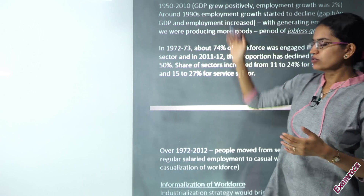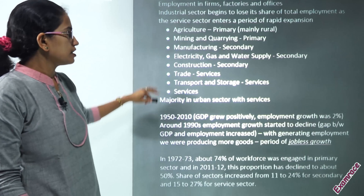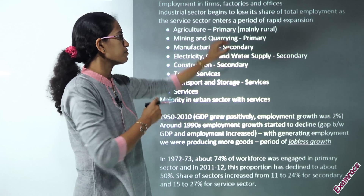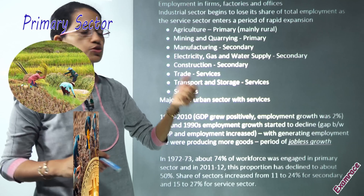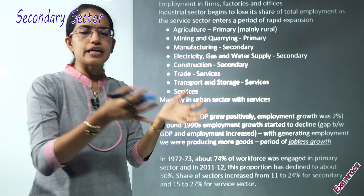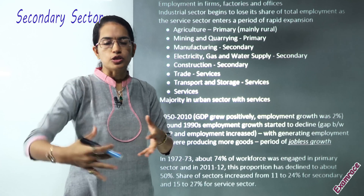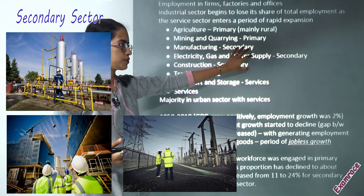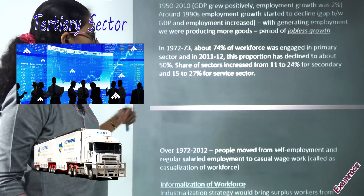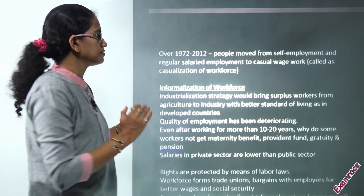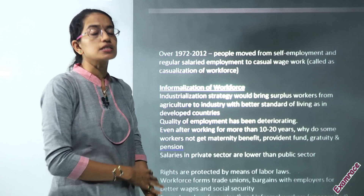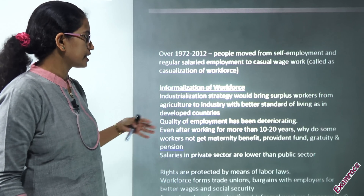Briefly, the primary sector involves working directly with nature — agriculture, mining, forestry, fishing. The secondary sector involves processing or manufacturing the produce from the primary sector — manufacturing and construction. The tertiary sector involves providing services — trade, transport, storage and urban services. Over the period, there has been a rise in the number of self-employed and regular salaried workers, while casual labourers have declined.